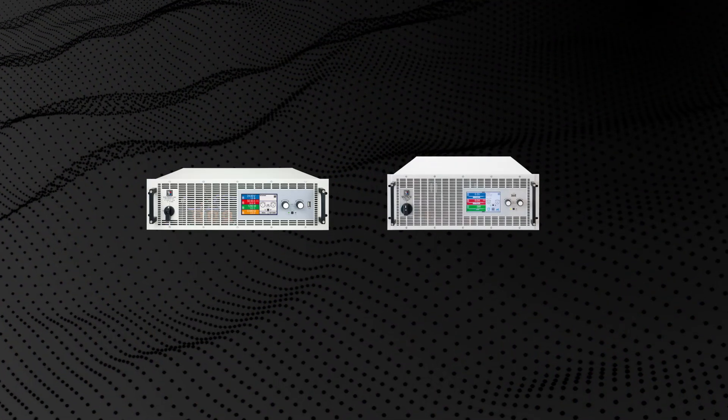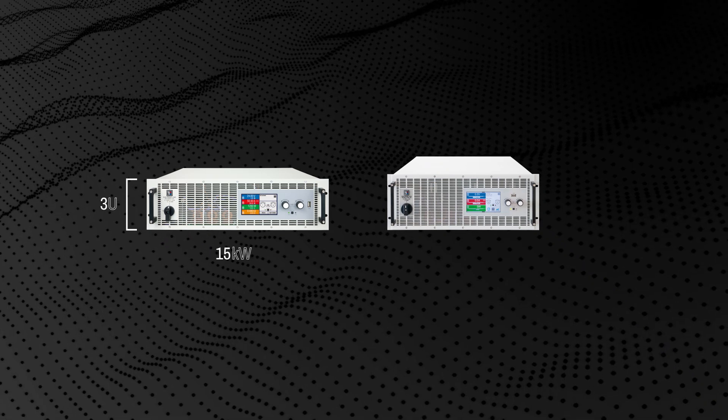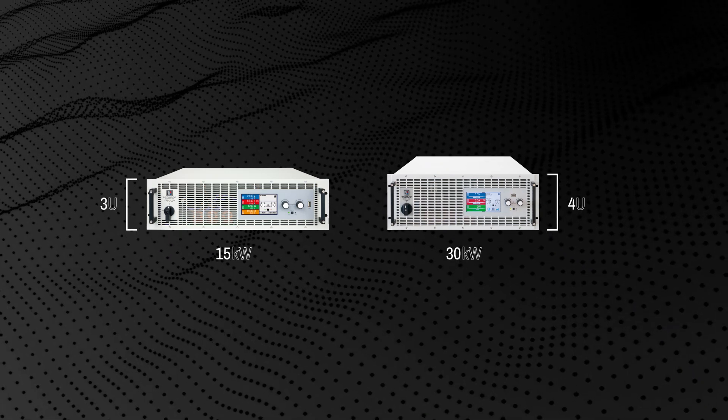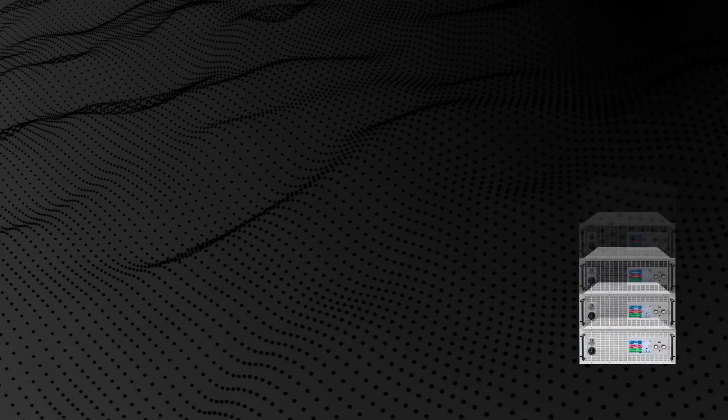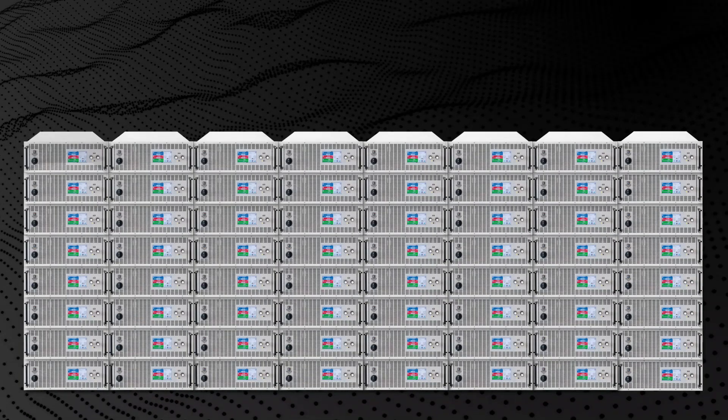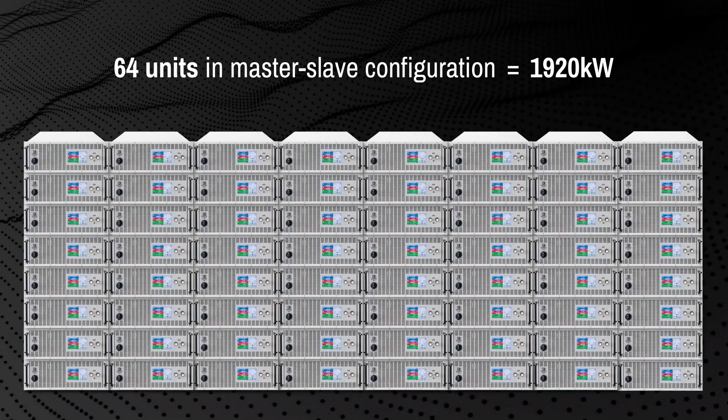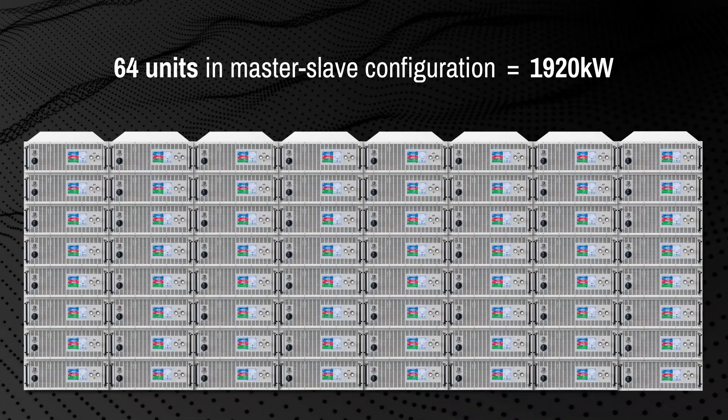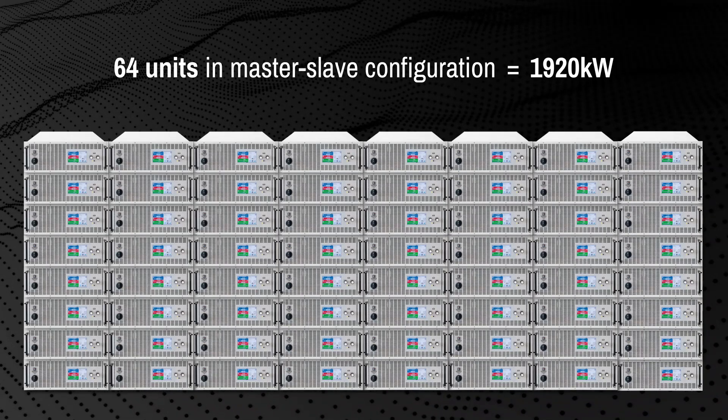Electroautomatics ELR series loads are available in 15kW 3U or 30kW 4U versions, with the ability to connect up to 64 units to address load requirements up to 2MW. Their rack mount design simplifies test setup and saves valuable test floor space compared to large resistive load banks.